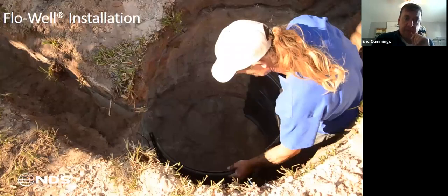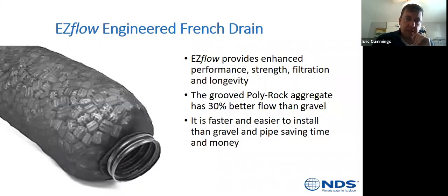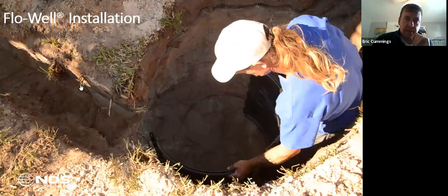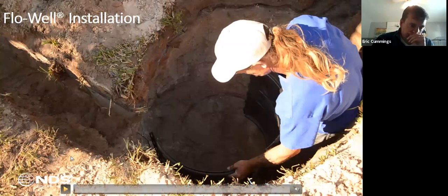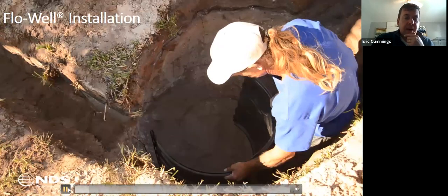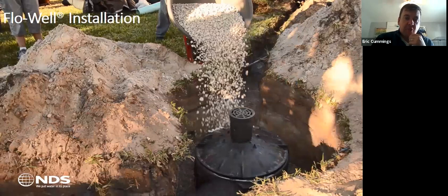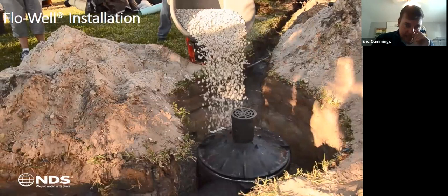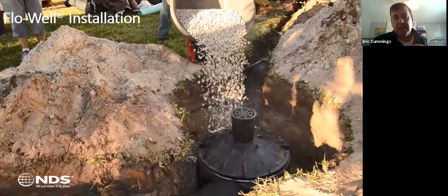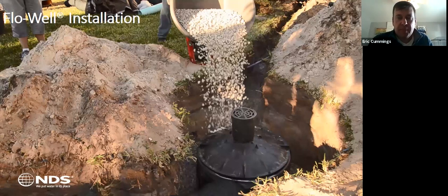Flow well comes in a box in three pieces — three sides and a lid. Gravel around it is always recommended, as well as some gravel underneath to create extra storage volume and give the water somewhere to flow instead of just sitting at the bottom making mud. Six inches to a foot of gravel does the application a lot of good.